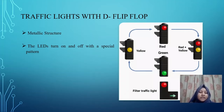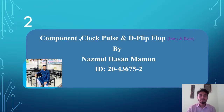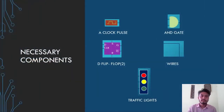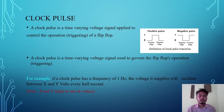Now my next presenter Nazmul Hassan Maun will discuss the next part. I will now discuss the clock pulse and role of D flip-flop in the traffic light. For this project you need some necessary components: a clock pulse, AND gate, D flip-flop, wire, and traffic lights. The clock pulse is a time-varying voltage signal applied to control the operation of a flip-flop. For example, if a clock pulse has a frequency of one hertz, the voltage oscillates between x and y voltage every half second.